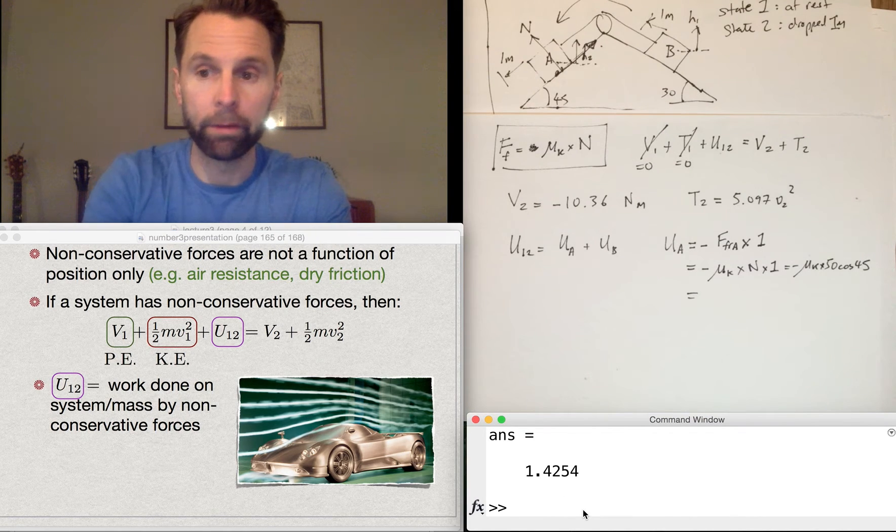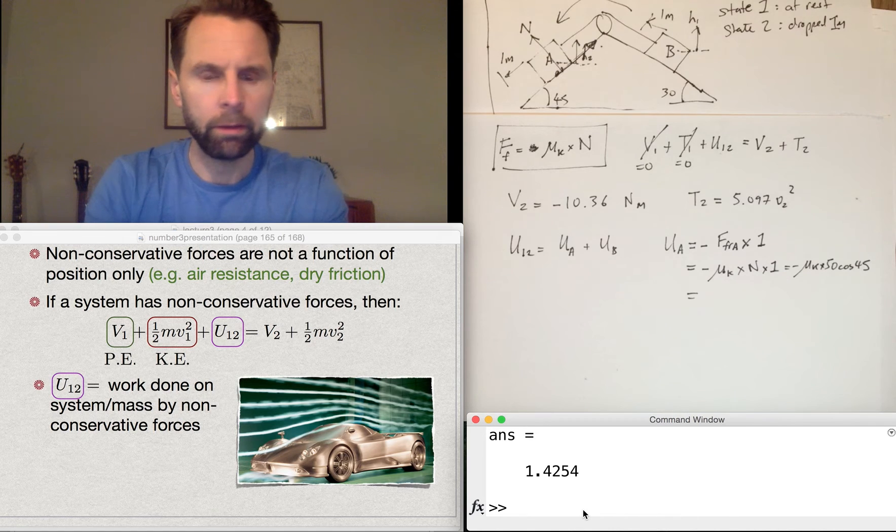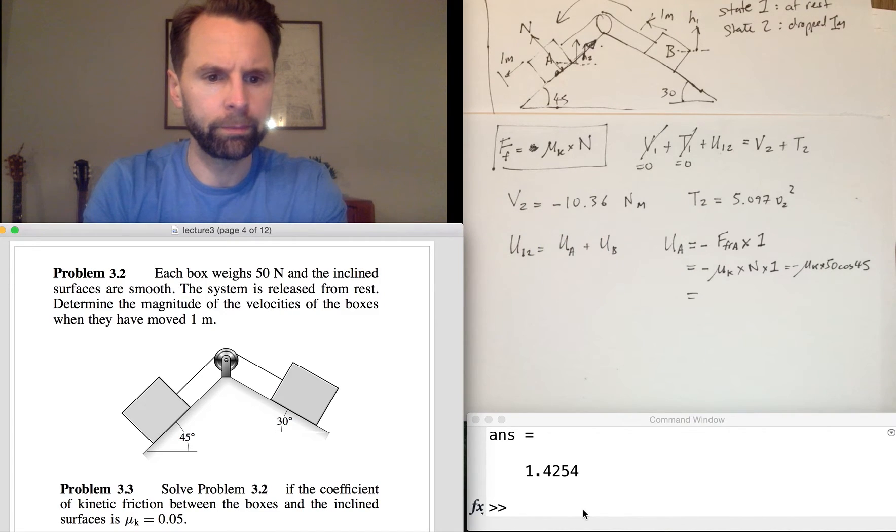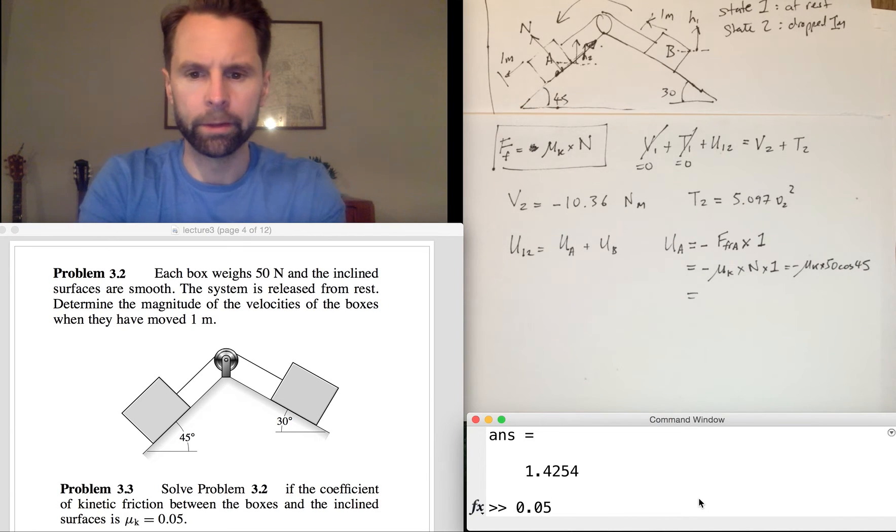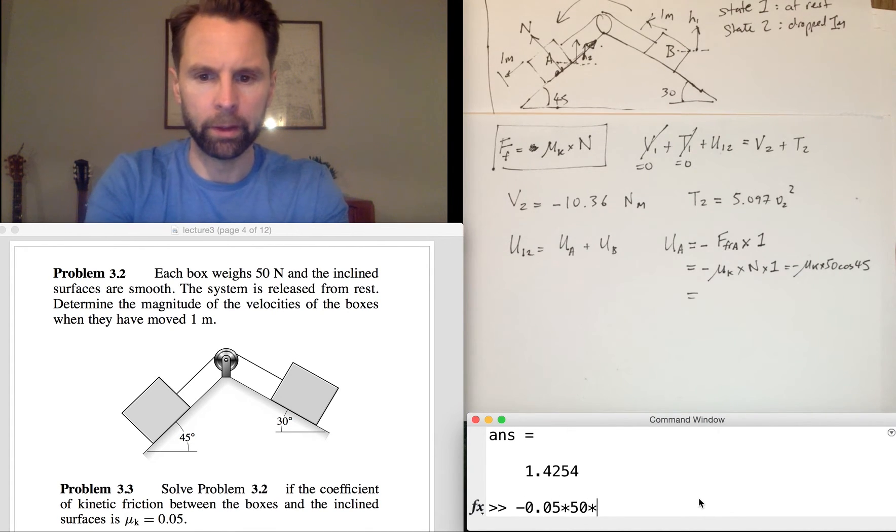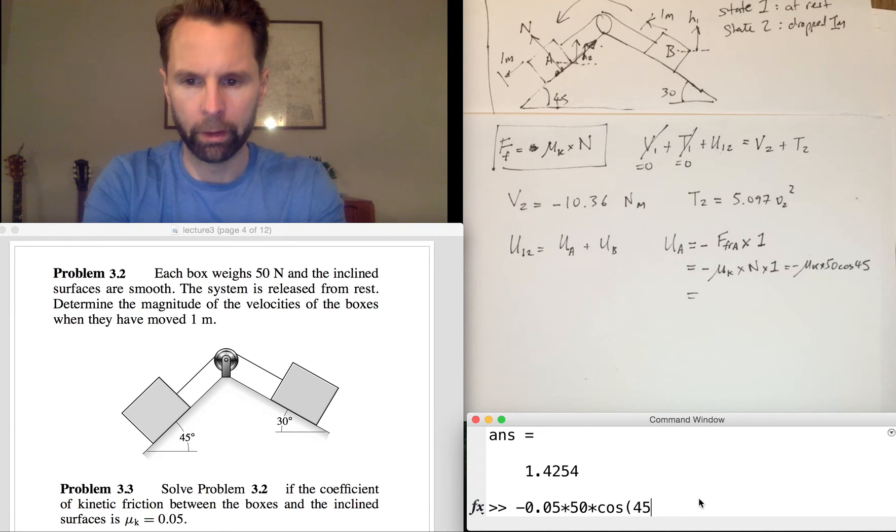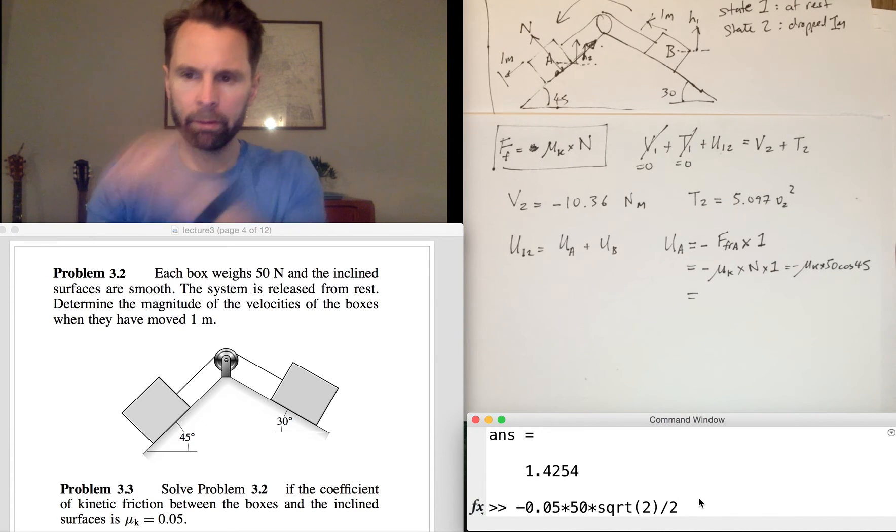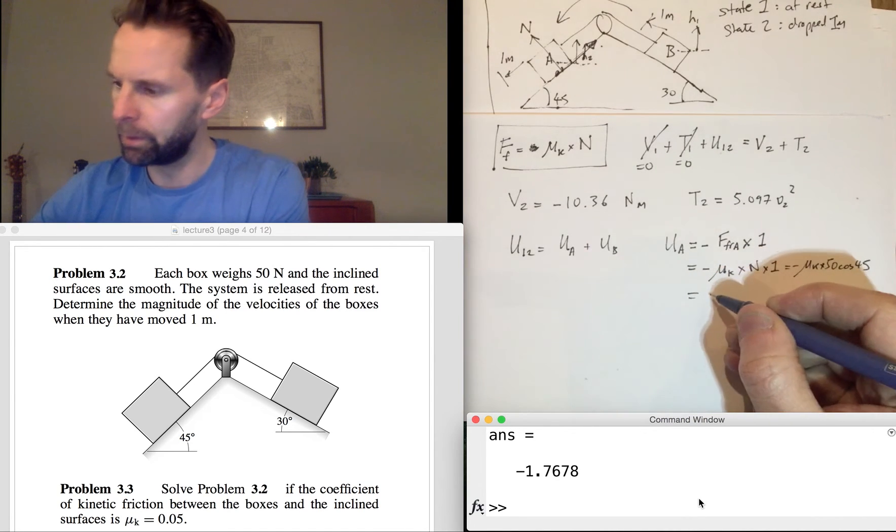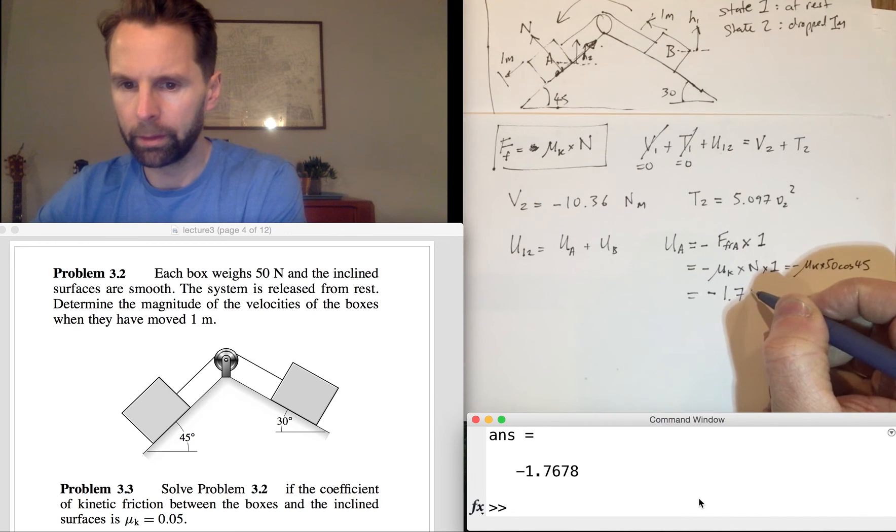The normal reaction here, using a bit of trigonometry, is going to be 50 cos 45. So minus mu K times 50 cos 45 times one. And that equals, so cos 45 is root 2 over 2, and the kinetic friction coefficient is 0.05, so minus 0.05 times 50 times root 2 over 2.